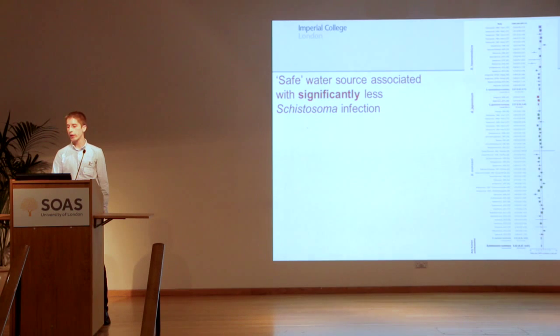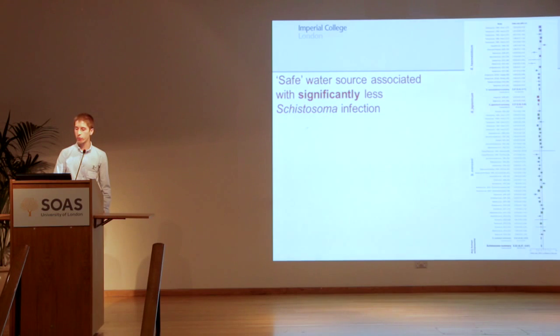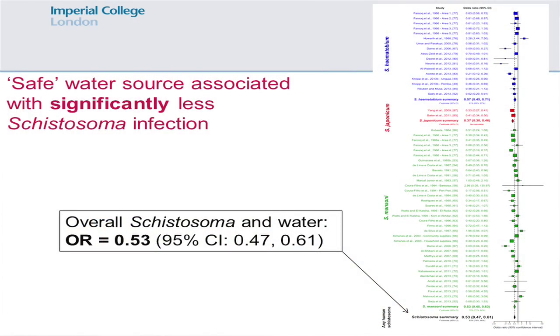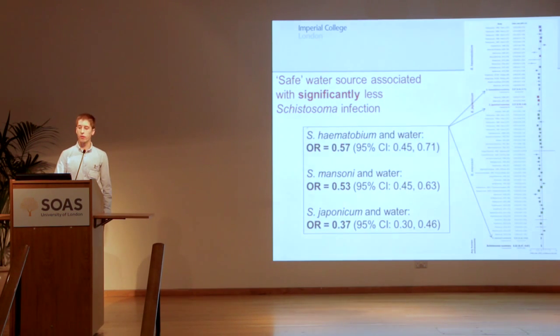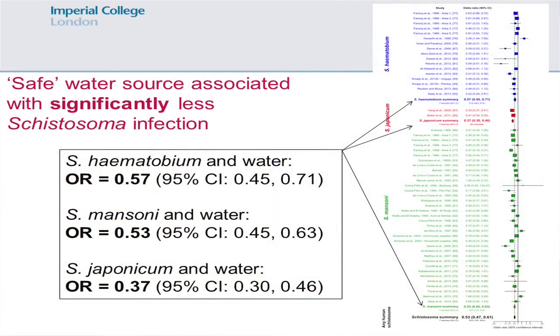This is the forest plot for safe water and schistosome infection. In blue are studies on S. haematobium, in red japonicum, in green mansoni, and in black at the bottom is the overall schistosoma summary. Overall, having safe water was associated with significantly lower odds of schistosoma infection, with an odds ratio of 0.53. This also held for each species — having safe water was associated with significantly lower odds of haematobium, mansoni, and japonicum infections.